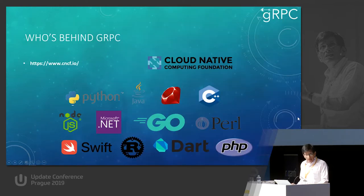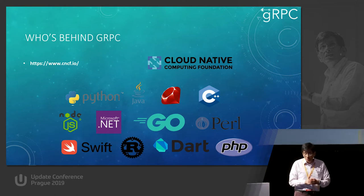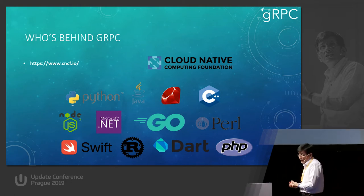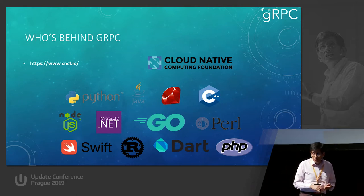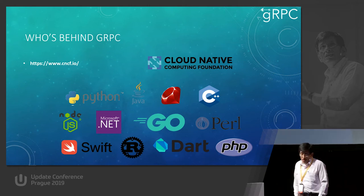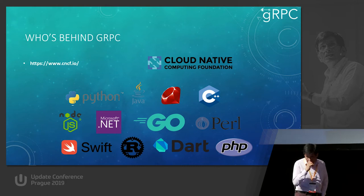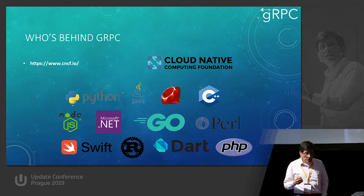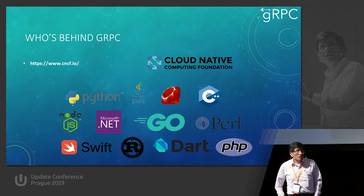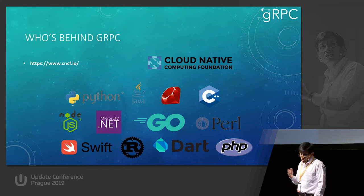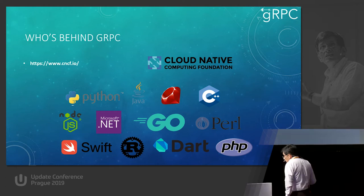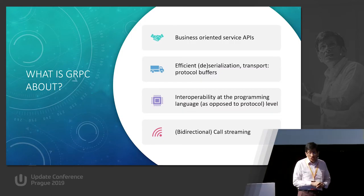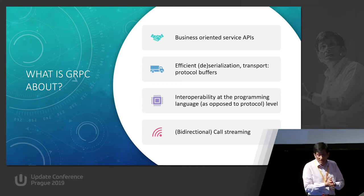Who's behind gRPC? gRPC is part of the Cloud Native Computing Foundation, an organization with members like Amazon, Google, Microsoft, and IBM - all the companies trying to push cloud computing. One interesting aspect of gRPC is it tries really hard to be as multi-platform as possible. There are implementations in Python, Java, Go, Swift, PHP, and .NET, which includes C#, F#, and Visual Basic .NET.